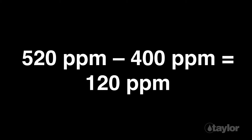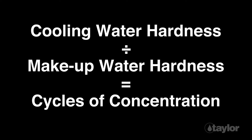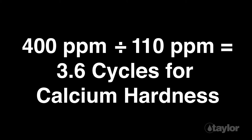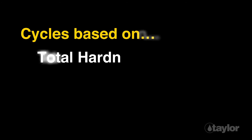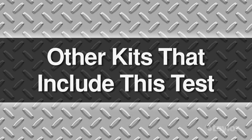Suppose the total hardness in the previous cooling water example was only 520 parts per million and the calcium hardness in the makeup water was 400 parts per million — then the magnesium hardness in the cooling water would be 120 parts per million. If we calculate the cycles of concentration for each hardness species, referred to as performing a hardness balance, we would find 3.7 cycles for total hardness, 3.6 cycles for calcium hardness, and 4 cycles for magnesium hardness. Since the calculated cycles of concentration are lower for total hardness and calcium hardness than for magnesium hardness, this could be an indication that scaling is occurring within the system.